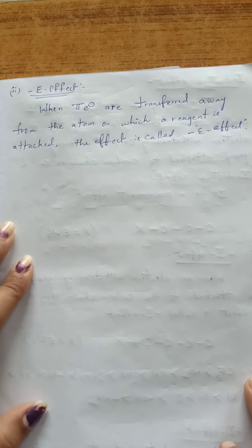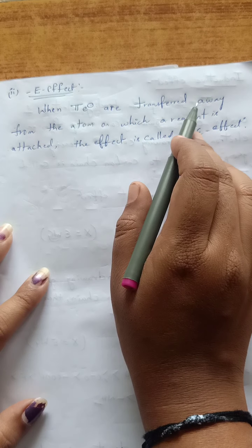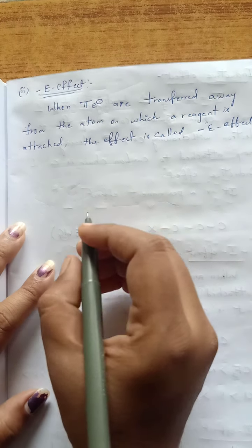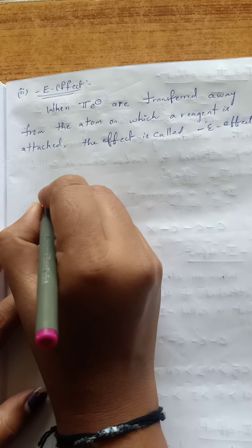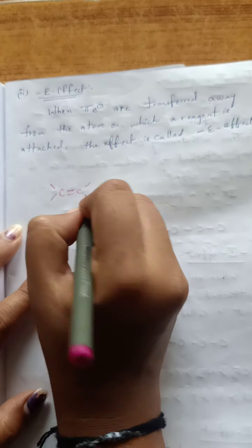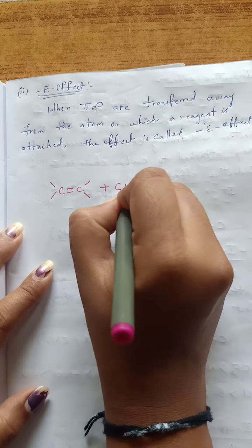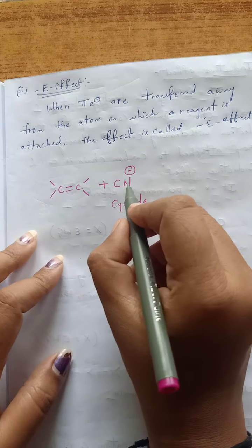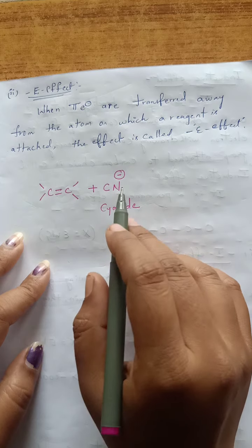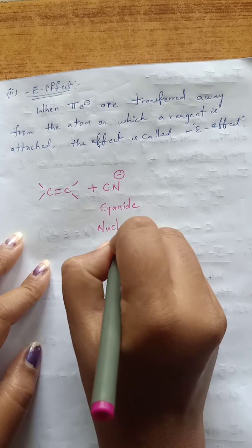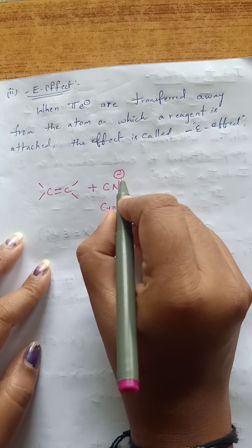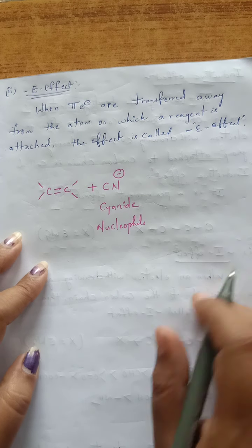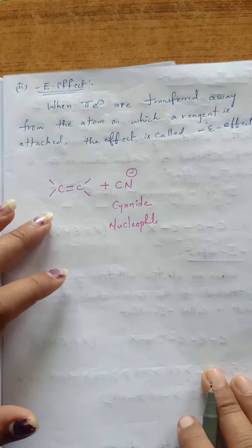In negative electromeric effect, pi bonded electrons are transferred away from the atom to which the reagent is attacked. For example, consider C=C (alkene) attacked by CN⁻ (cyanide). Due to its negative charge, cyanide is known as a nucleophile — it has extra electrons and attacks wherever electron density is less.